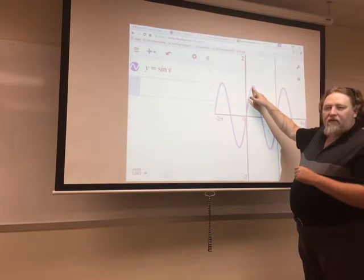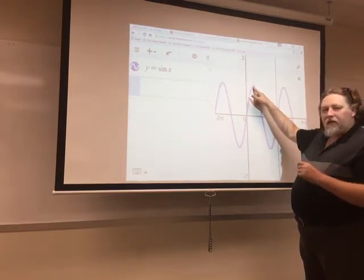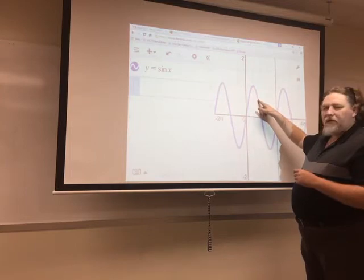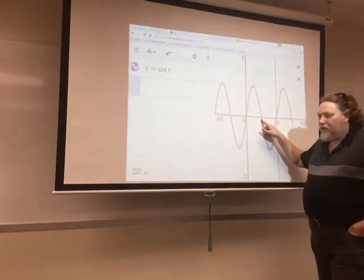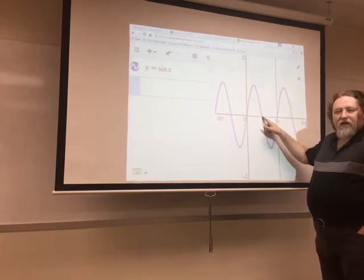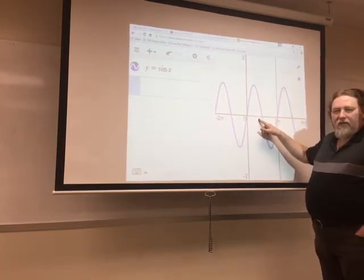And then, as the angle gets bigger and bigger, looking at the unit circle, I would see that the sine would get smaller and smaller, until I got to pi. At pi, sine would be equal to zero again.